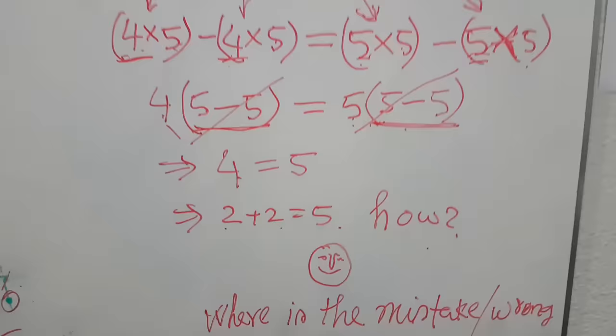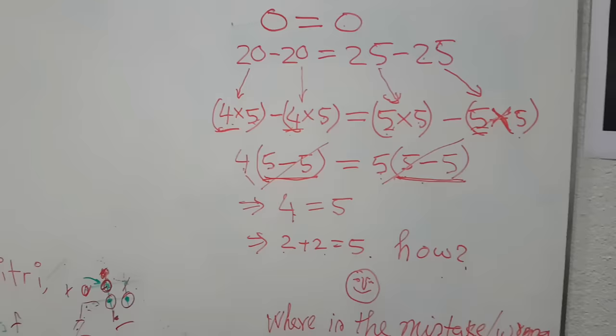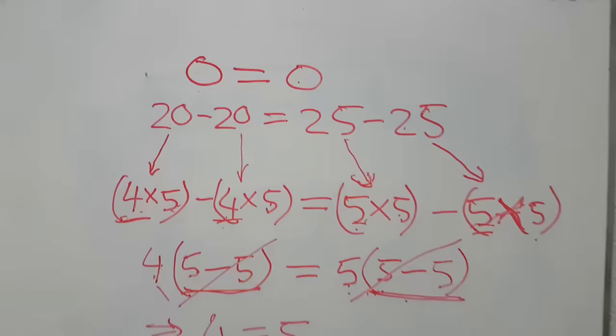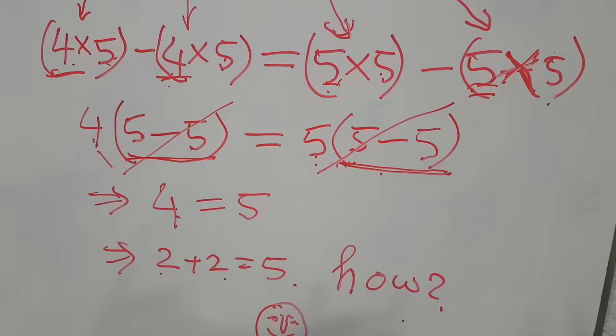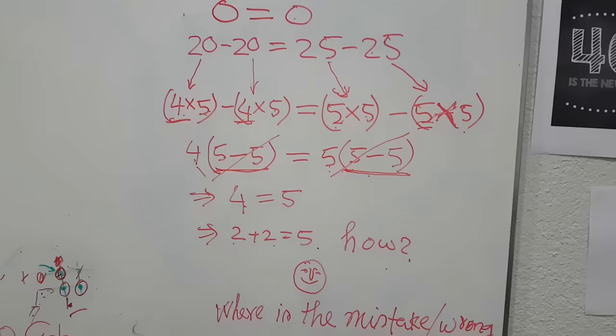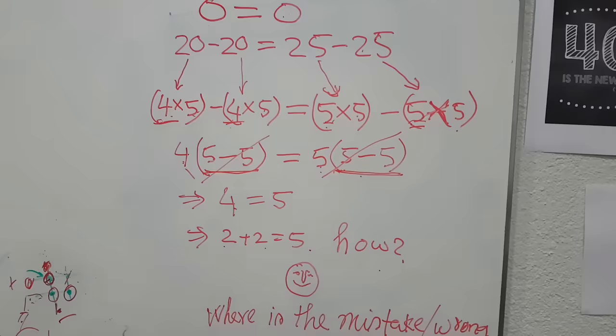If you can find out where the error is, I know you are really a genius. I believe almost 95% of people miss where the mistake is in this equation. Your task is to find out where I did not follow the rules of mathematics — because this was not truly a mistake, I intentionally broke a mathematical rule.